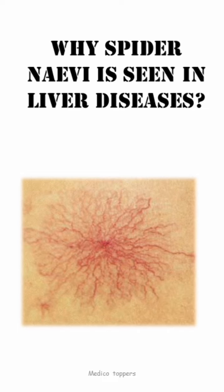Spider nevi is nothing but a telangiectasia where there will be dilatation of the arteriole. Because of the dilatation of the arteriole, we can see the capillaries branching out of it. You can see in the image clearly — the central dot is indicating the arteriole, and because of the dilatation of the arteriole, the capillaries around it are clearly seen due to the increased blood flow.